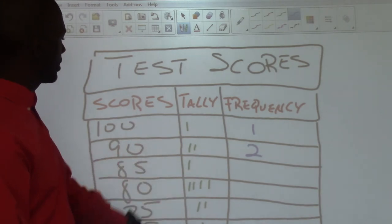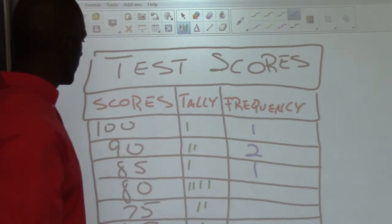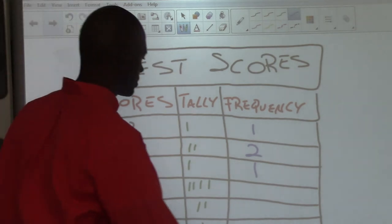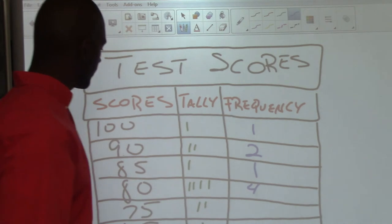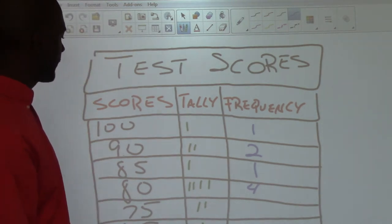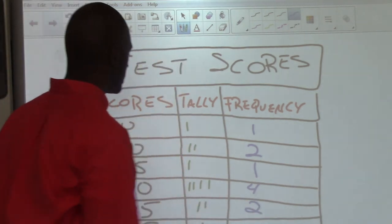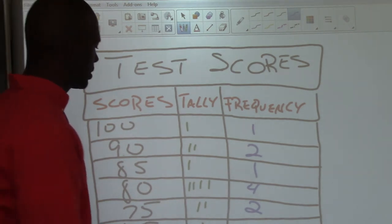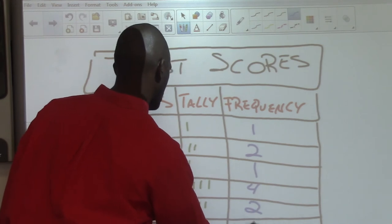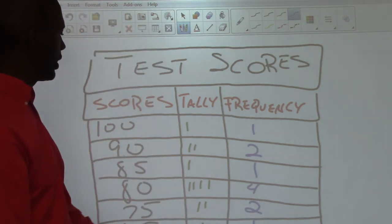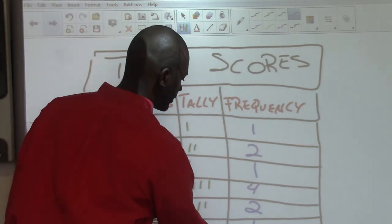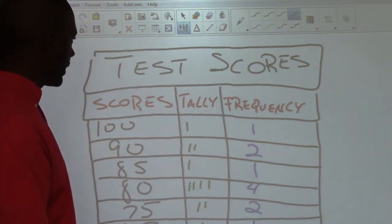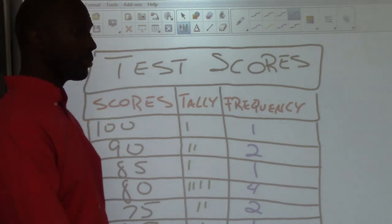For 85, we have one tally mark, so the frequency is one. For 80, the frequency is four. For 75, we have two tally marks, so the frequency is two. For 65, we have one tally mark, so the frequency is one. And for 50, we have one tally mark, so the frequency is one. That gives us our completed frequency table.